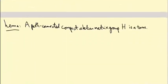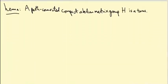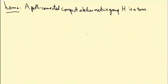Here's the statement we're trying to prove in this video: a path-connected compact abelian matrix group H is a torus — in other words, it's isomorphic to U(1)^n for some n.